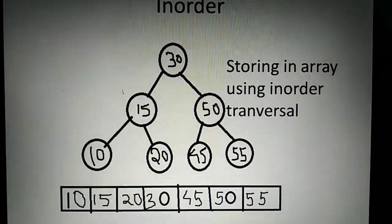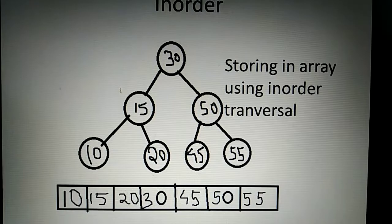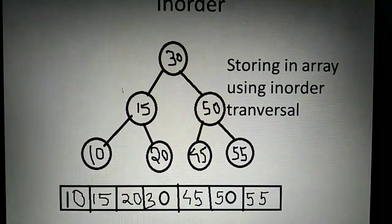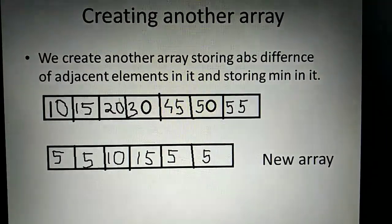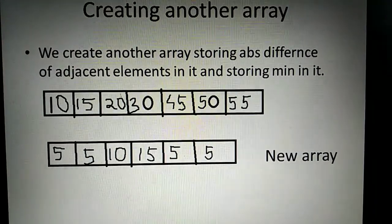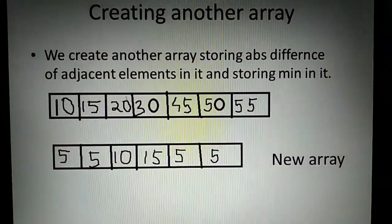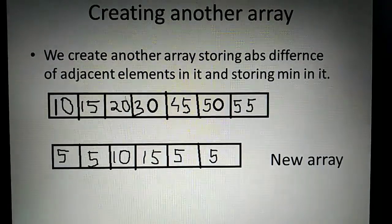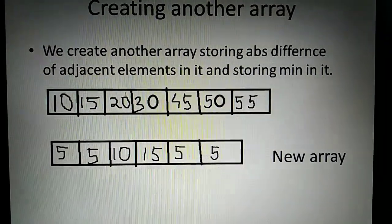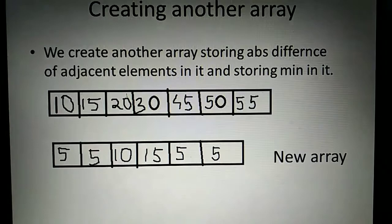10, 15, 20, 30, 45, 50, and 55. Now we create another array which will store the absolute difference of adjacent elements and store the minimum in it.